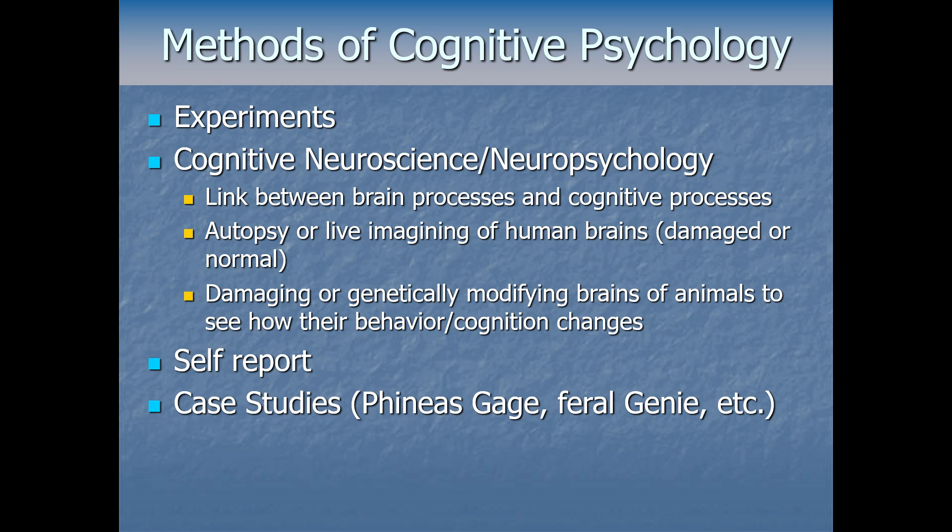We also learn about psycholinguistics — the psychology of language — by studying cases like Genie, a famous so-called feral child who suffered severe neglect and isolation, had basically not learned language, and hadn't been around people. Her case helped us understand language development and contributed to debates about whether language is innate or whether there's a critical period of development, after which someone can't pick up a language. So we can learn basic scientific things about how language and the brain work by studying individual extreme cases.